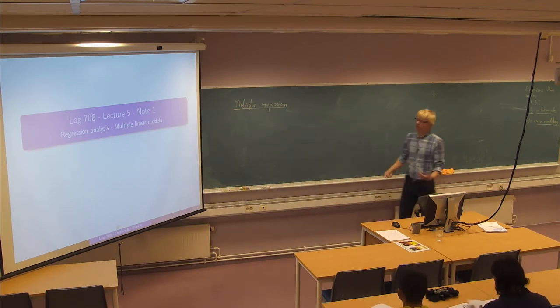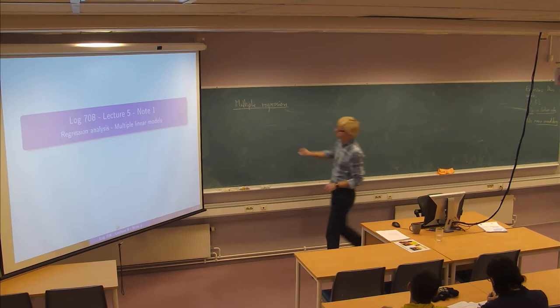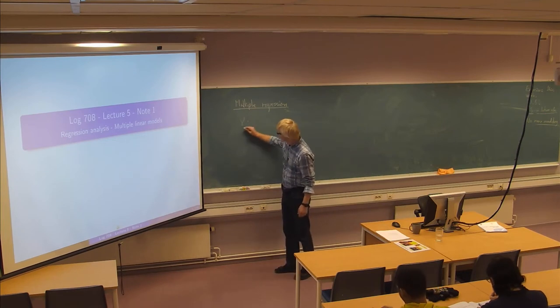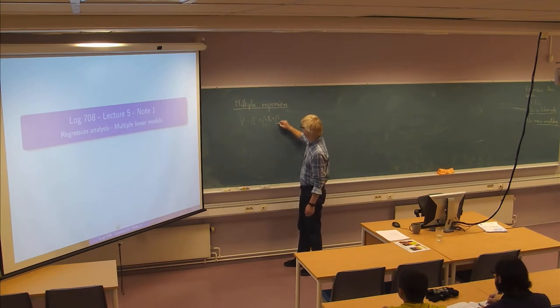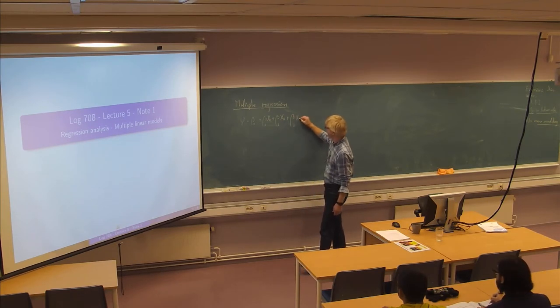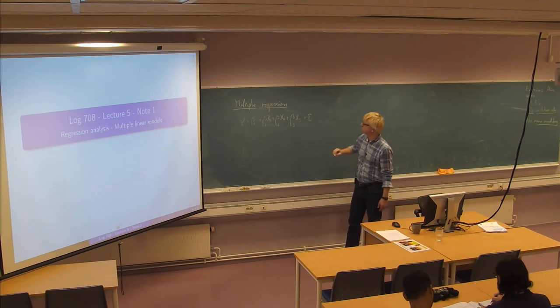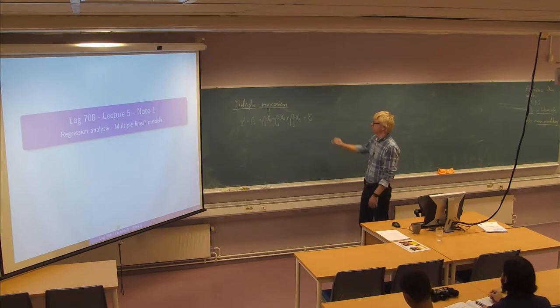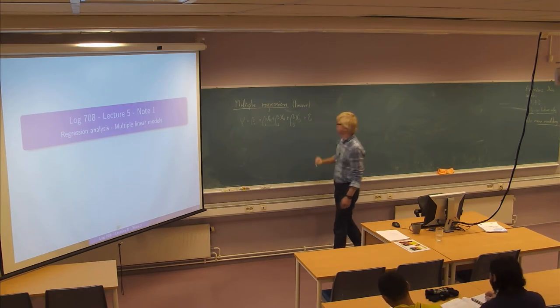We started just briefly last week to talk about multiple regression models, which means basically we have a dependent variable and then we have some number of independent variables. So the linear models can look like this, for instance, if we have three independent variables, three x variables. So we have this linear function plus this random error term. So this is a multiple linear regression model.